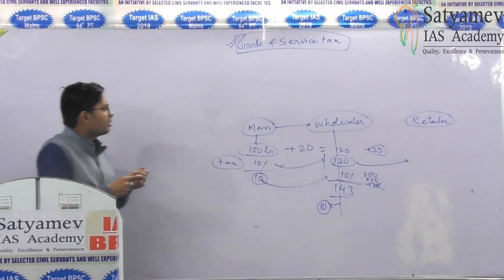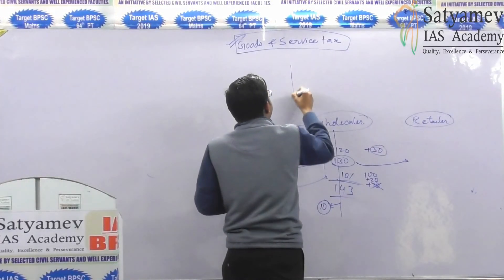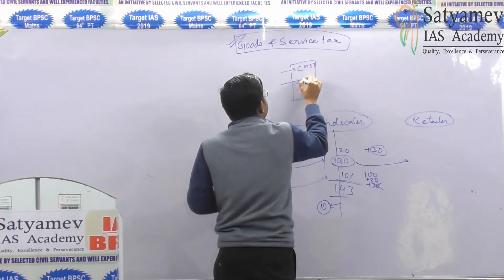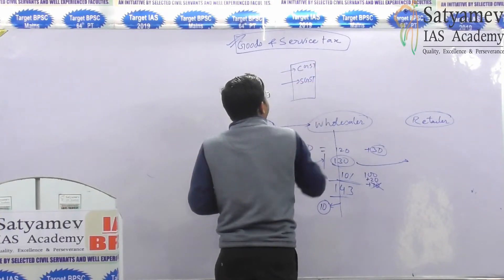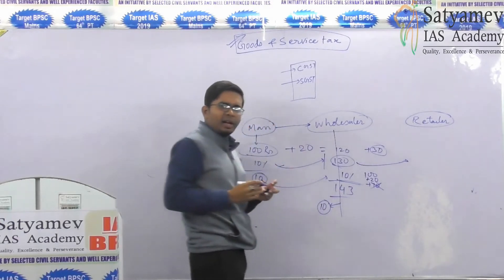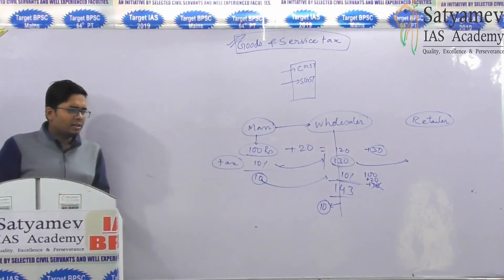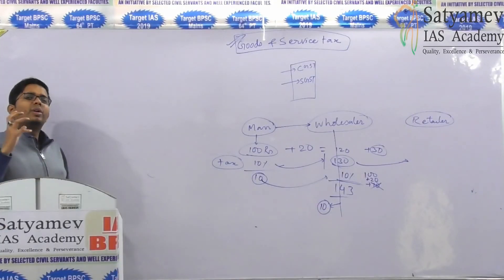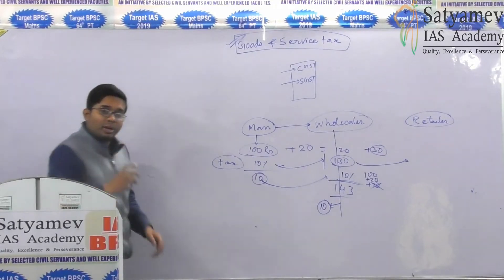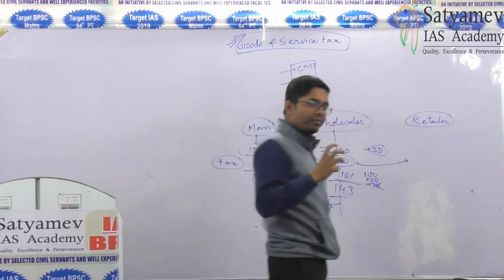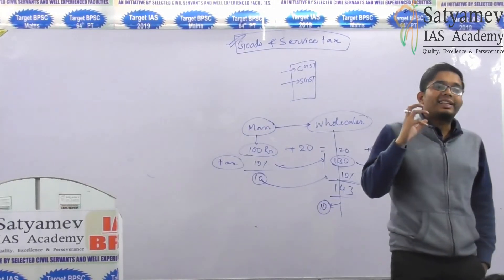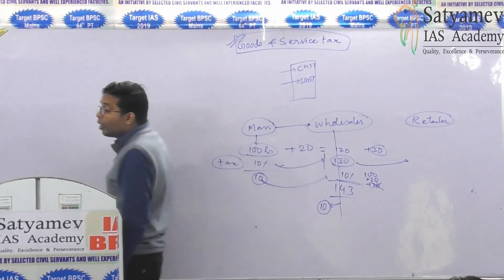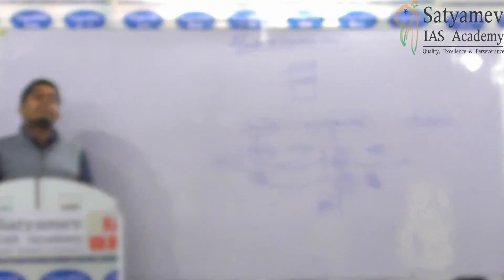That's why restaurant bills should now be analyzed — now the bill only shows two things: CGST and SGST.